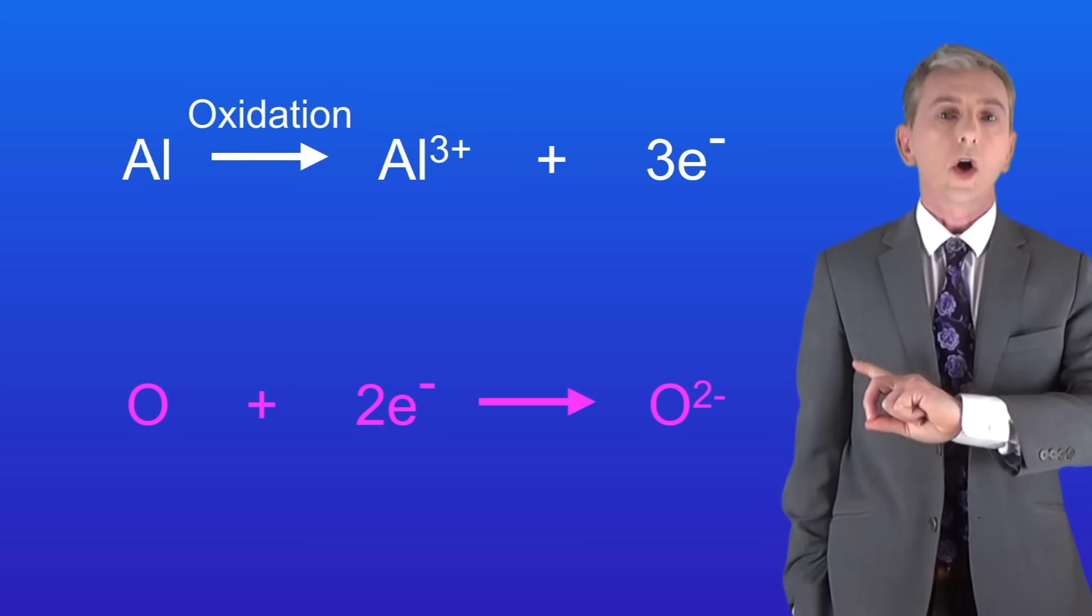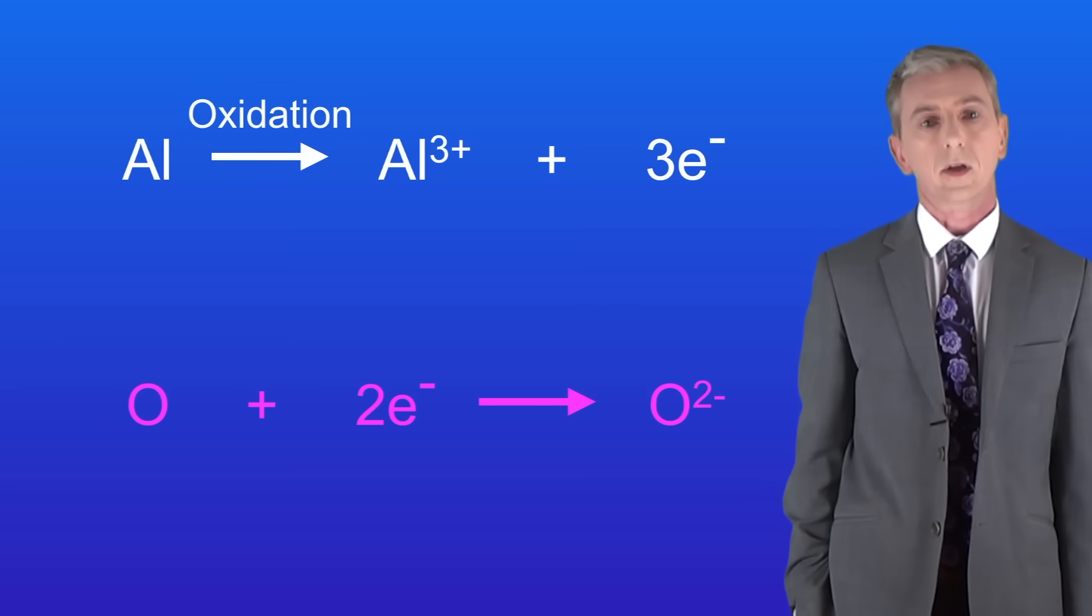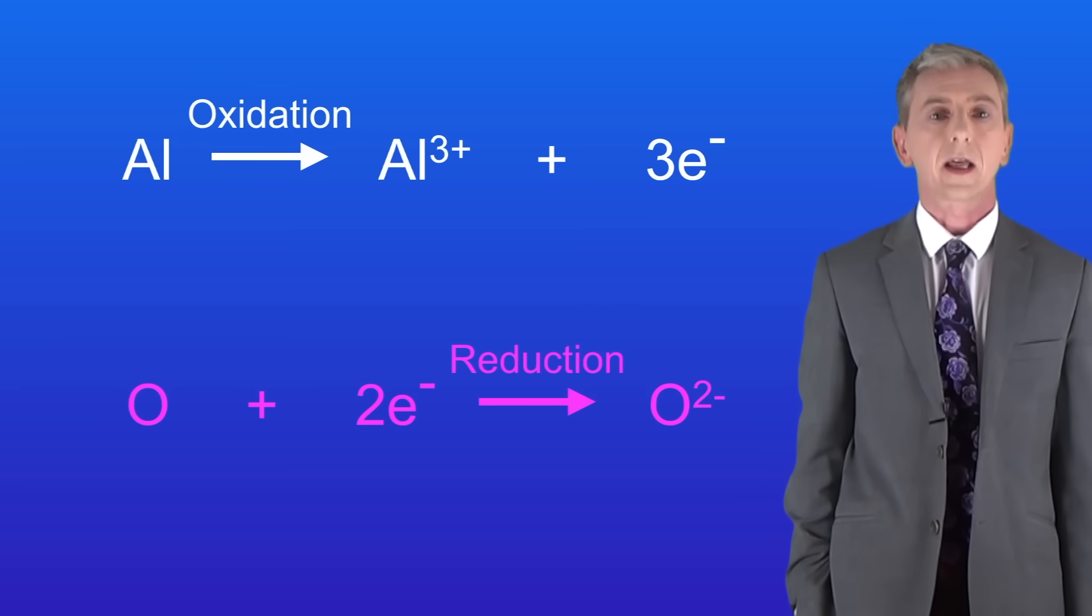This half equation shows an oxygen atom gaining two electrons to form an oxide ion. This is a reduction reaction as the oxygen atom has gained electrons.